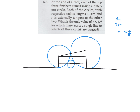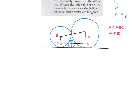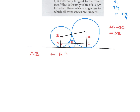Let me label the points: call A and C the tangent points of the medium and small circles on the line, B the center of the small circle, E the center of the medium circle, and D the center of the large circle. Because these are right angles drawn in parallel, AB plus BC equals DE.